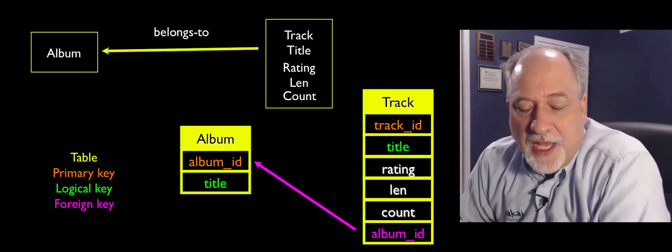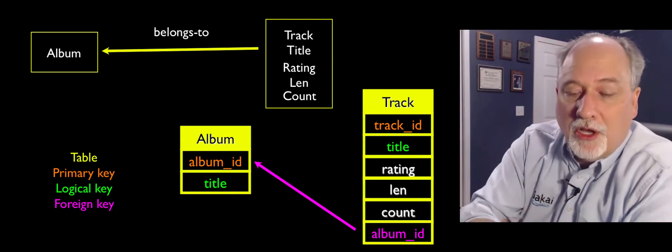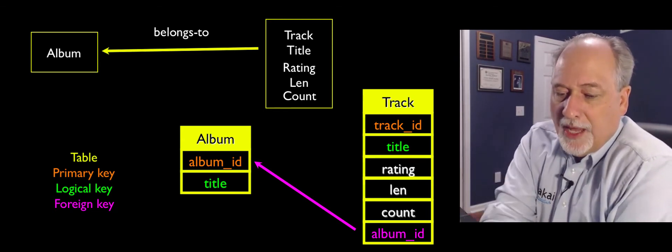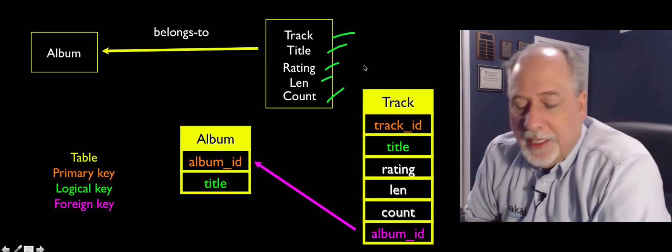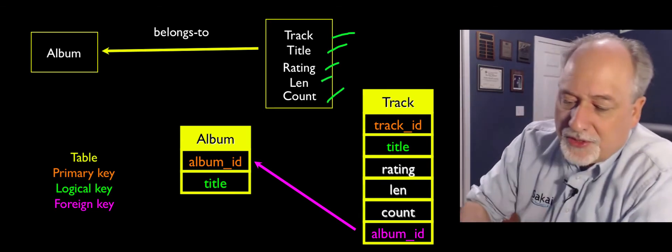So if we just take a look at the track belonging to the album, so we have the track, its title, its rating, its length, and its count. And those are just the data items.